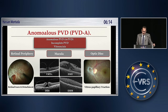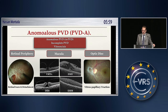The anomalous PVD can occur anywhere in the fundus. In the retinal periphery it leads to formation of retinal breaks and retinal detachment. On the macula, it leads to the vitreoretinal interface disorders. And if there is no detachment of the vitreous on the optic disc, we have a vitreopapillary traction.